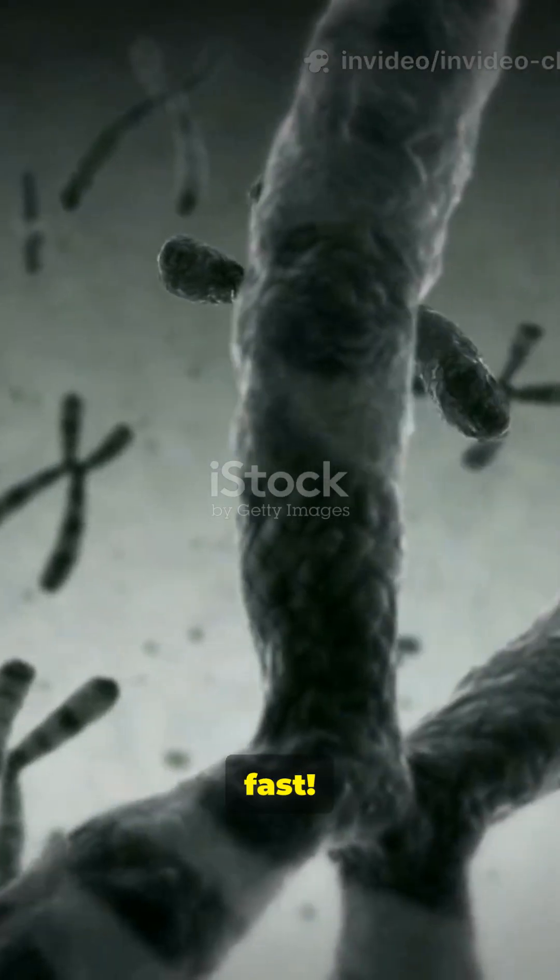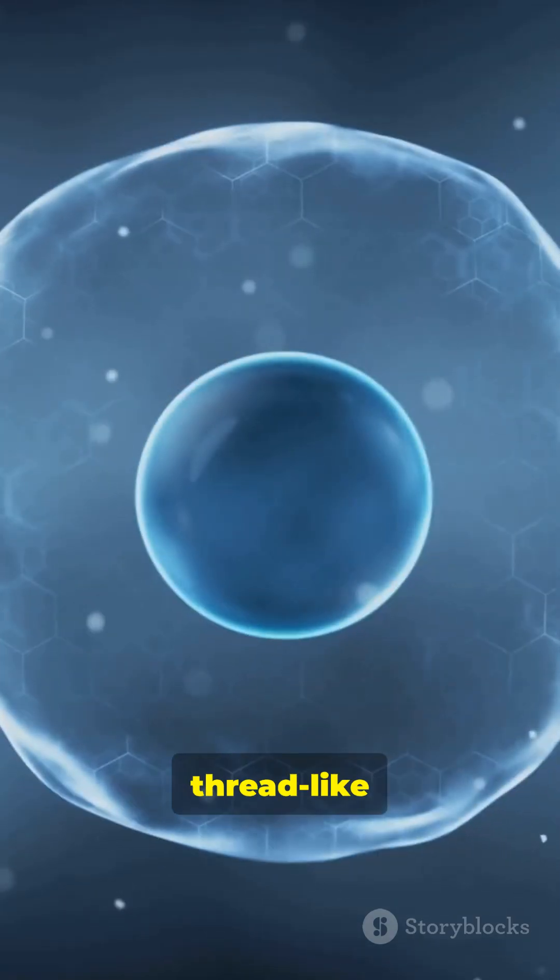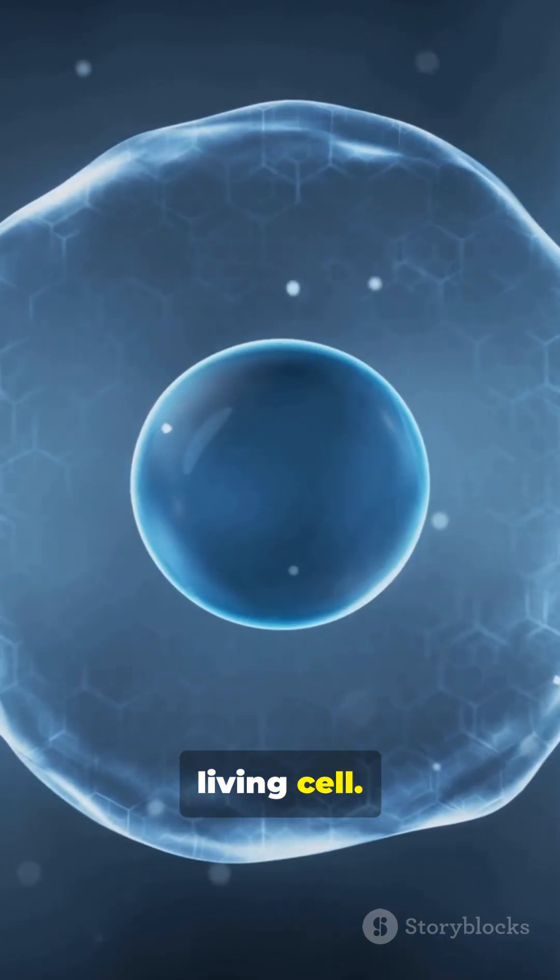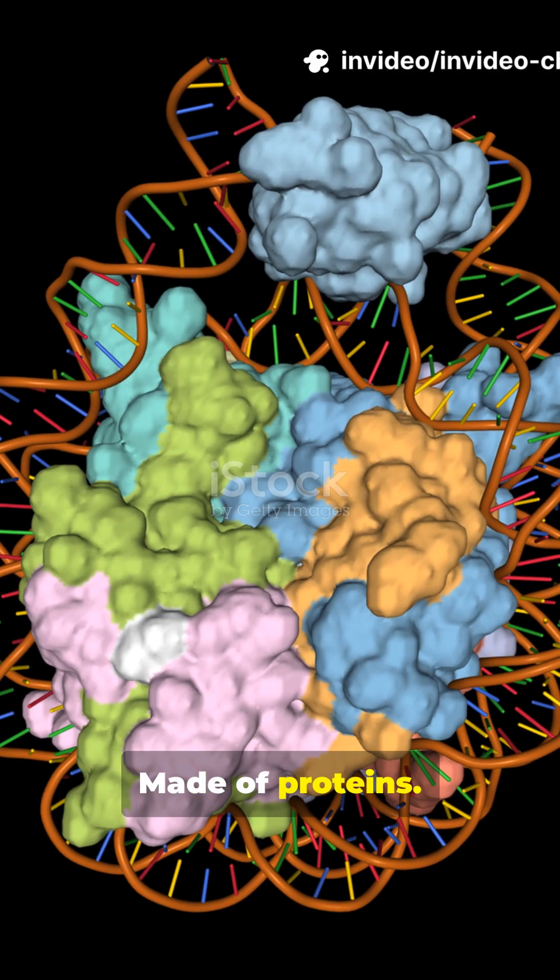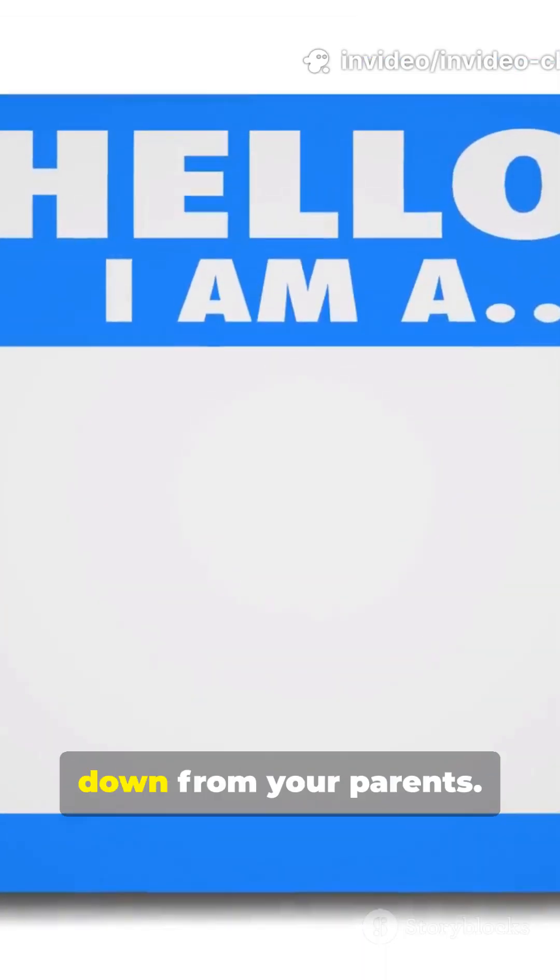Let's break them down, fast. Chromosomes are thread-like structures in the nucleus of every living cell, made of DNA, made of proteins. They're the blueprints handed down from your parents.